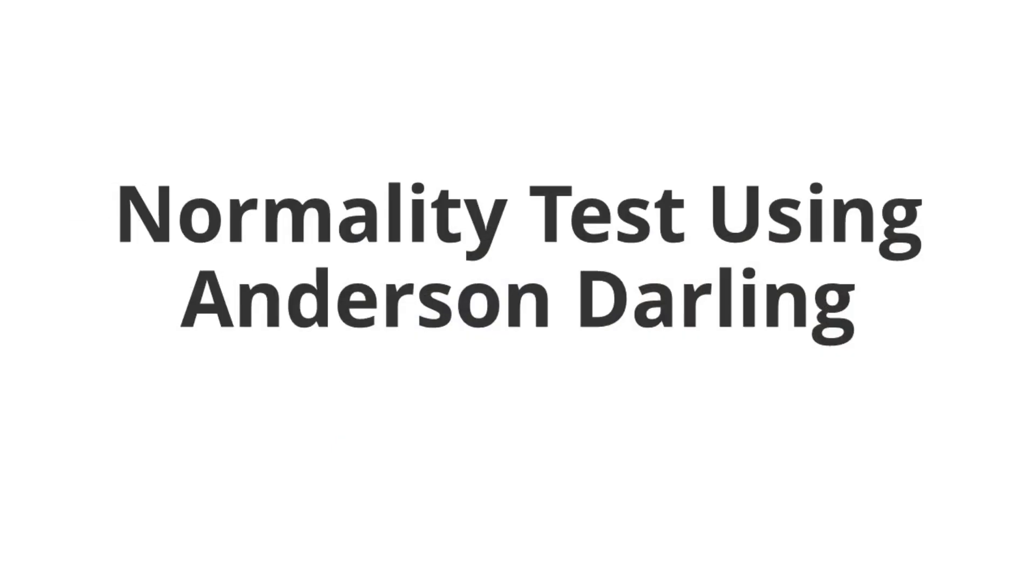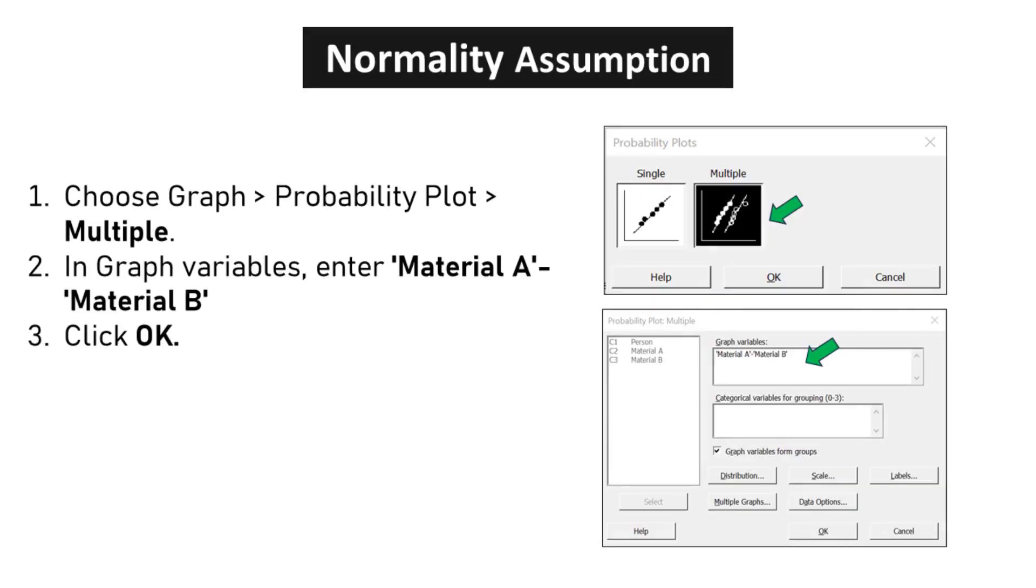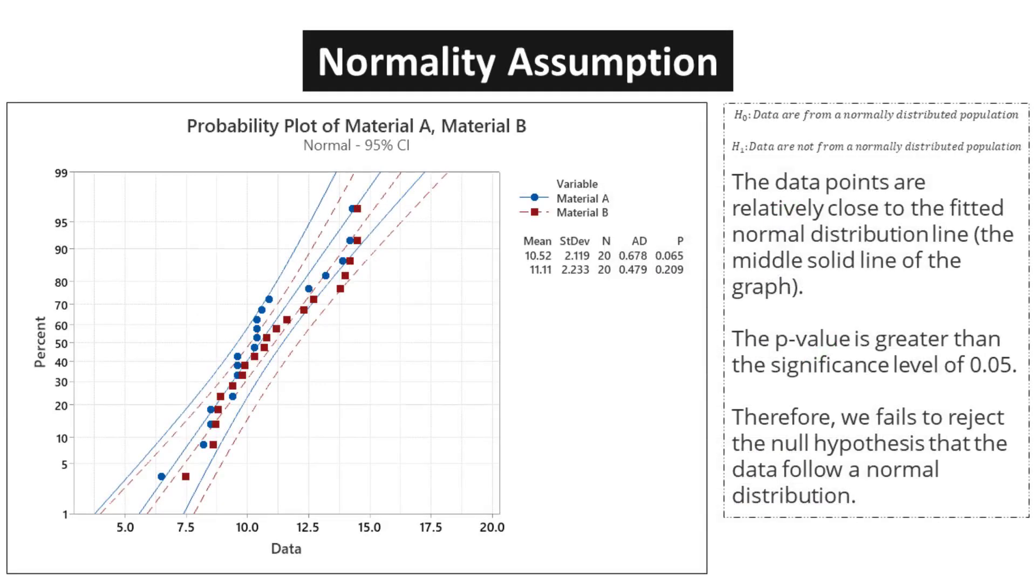Normality test using Anderson-Darling. Choose graph probability plot multiple. In graph variables, enter material A material B. Click OK. The data points are relatively close to the fitted normal distribution line, the middle solid line of the graph. The p-value is greater than the significance level of 0.05. Therefore, we fail to reject the null hypothesis that the data follow a normal distribution.